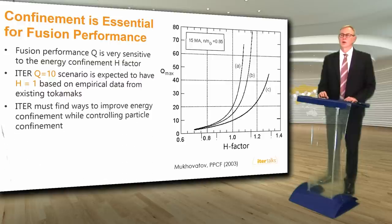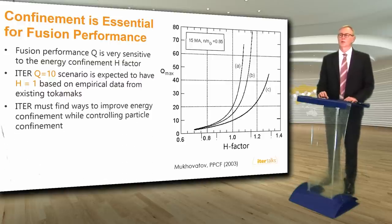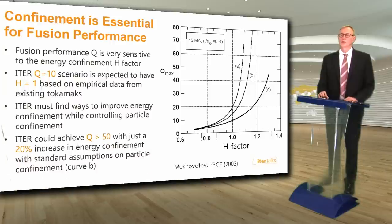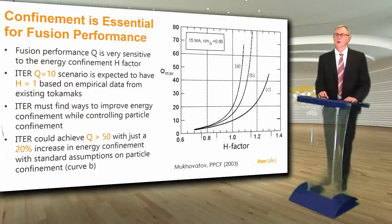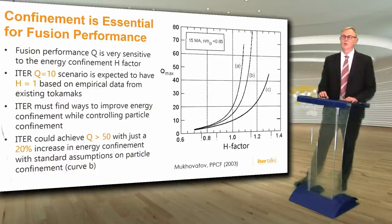ITER must find ways to improve the energy confinement while controlling the particle confinement. With standard assumptions on particle confinement, ITER could achieve Q greater than 50 with just a 20% increase in the energy confinement — meaning ITER could achieve high enough performance to produce net electricity with only a 20% increase in the assumed confinement.